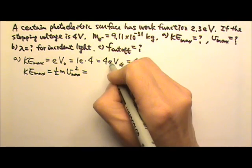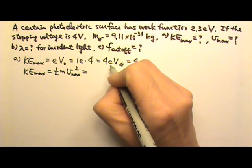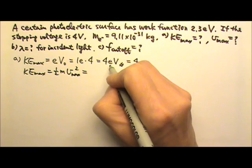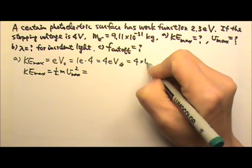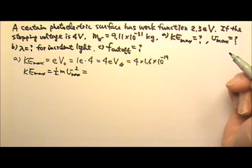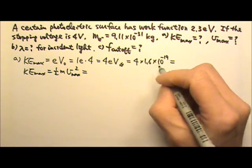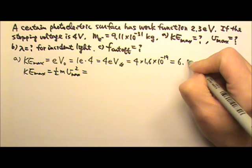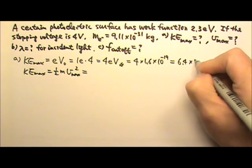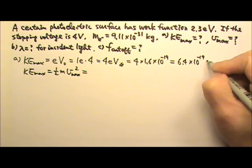Replace e with the standard unit in Coulombs. 1e = 1.6×10⁻¹⁹ C. This gives energy in Joules: 6.4×10⁻¹⁹ J.